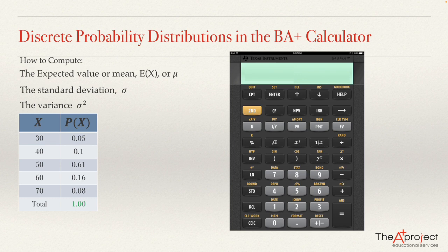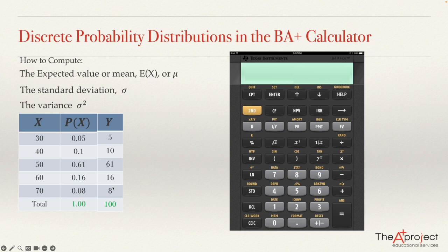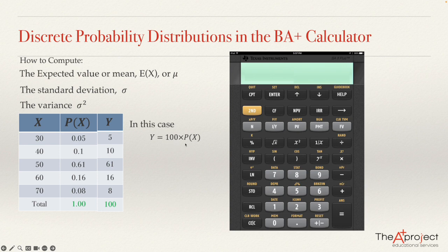I'm going to solve this problem using this technique. The frequency values we input are 5, 10, 61, 16, and 8 — constructed from the probabilities. These are the inputs for the calculator, not the raw probabilities. We input the values of x and y into the data worksheet of the BA Plus calculator. The y values are the probabilities multiplied by 100. If there were 3 decimal places, we'd multiply by 1,000; if 4 decimals, multiply by 10,000, and so on.